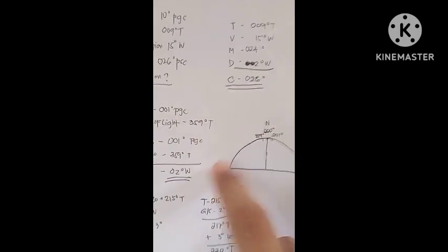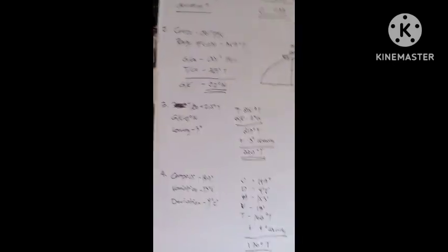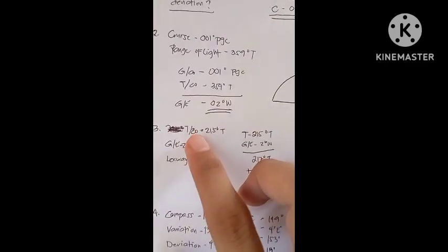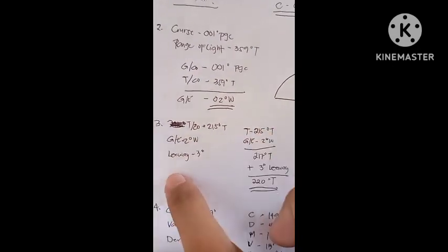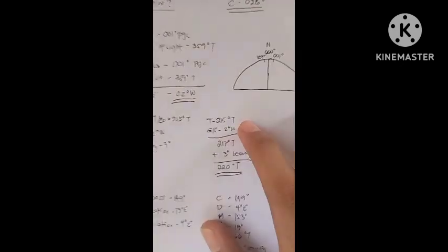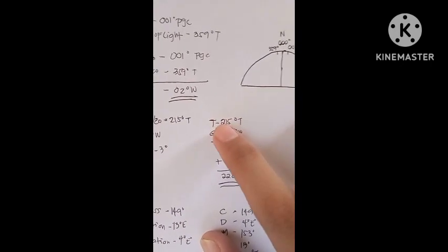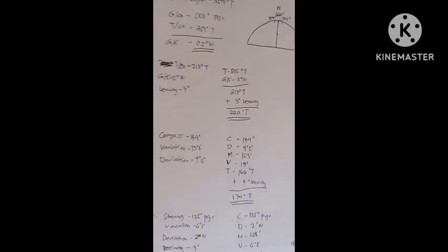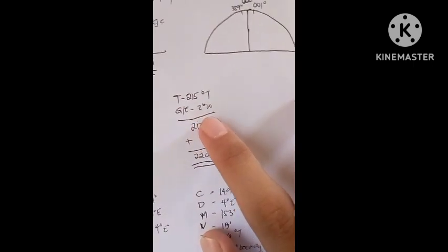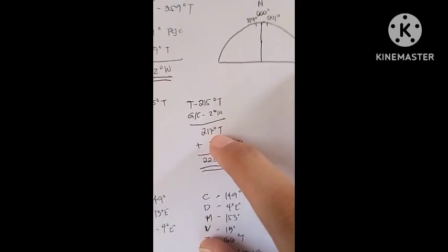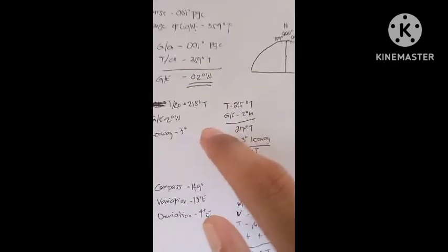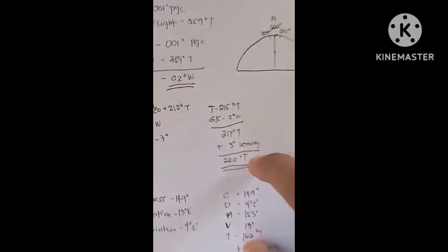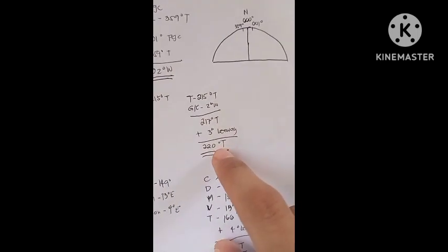Number three: we have a given true course of 215 degrees true, a gyro error of 2 degrees west, and a leeway of 3 degrees. To get the steering course, we start with 215 degrees true and add the gyro error to get 217 degrees, then add the 3 degrees leeway so our true course for steering is 220 degrees true.